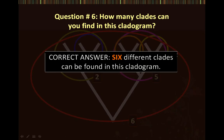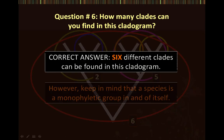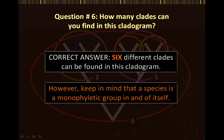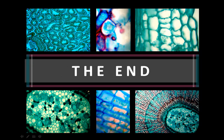Keep in mind that a species is a monophyletic group in and of itself. So technically, we could also count each tip as a clade as well. This concludes the first animation of phylogenetics. Stay tuned for more.